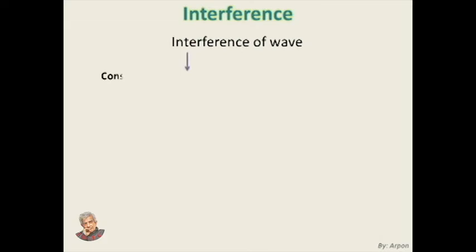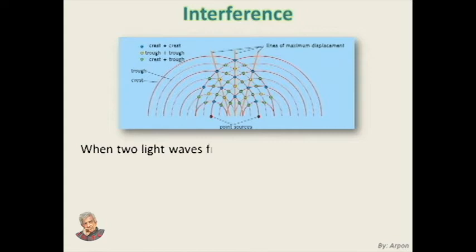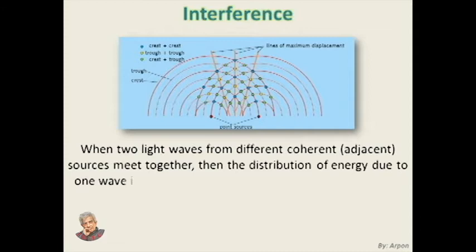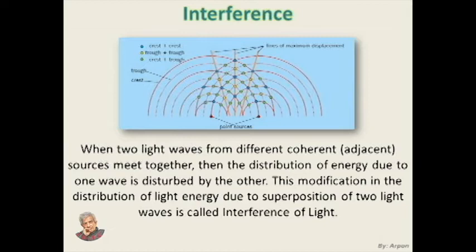When two waves meet together, two things can happen: constructive interference or destructive interference. Constructive interference occurs when the maxima of two waves, which are in the same phase, add together so that the amplitude of the resulting wave equals the sum of the individual amplitudes; equivalently, the minima of the waves are aligned. Destructive interference occurs when the maxima of two waves are 180 degrees out of phase — a positive displacement of one wave is cancelled exactly by a negative displacement of the other, and the amplitude of the resulting wave is zero. The straight line is the result of destructive interference. When two light waves from different coherent sources meet, the distribution of energy due to one wave is disturbed by the other. This modification in the distribution of light energy due to superposition of two light waves is called interference of light.